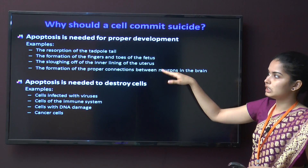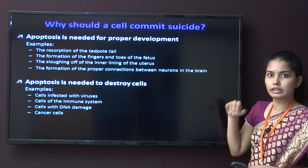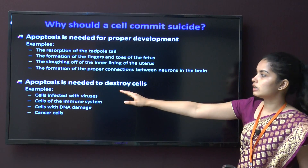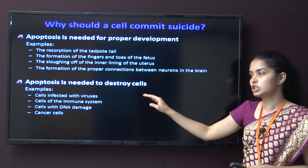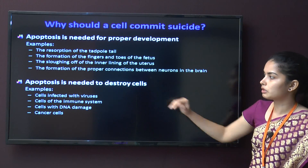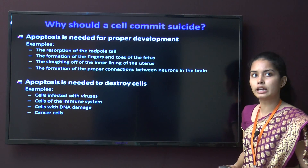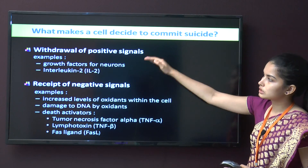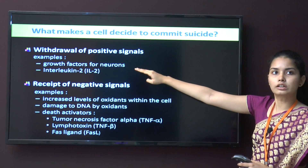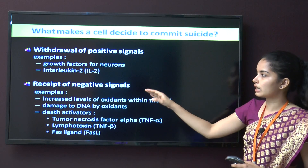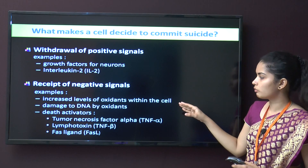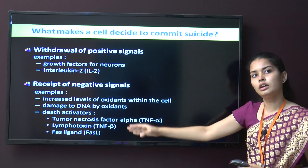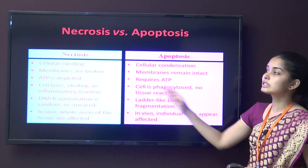Examples of apoptosis needed for proper development include: resorption of tadpole tail, formation of fingers and toes in the fetus, sloughing of the inner lining of the uterus, and formation of proper connections between neurons in the brain. Apoptosis also destroys harmful cells: cells infected with virus, cells of the immune system, cells with DNA damage, and cancer cells. Positive signals include interleukins and growth factors; negative signals include increased levels of oxidants and DNA damage.